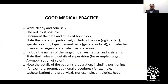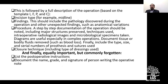When we do surgery, we need to mention the site — whether right or left — what type of anesthesia, whether it is an emergency or elective procedure, who are all the people involved in the surgery, and we need to give detailed description of the pre-operative preparation, the procedure, any additional procedures, and any additional medications given. This is followed by a full description of the operation.